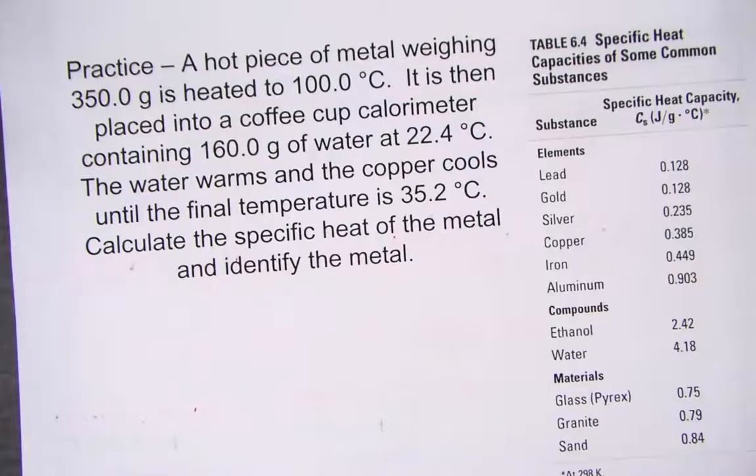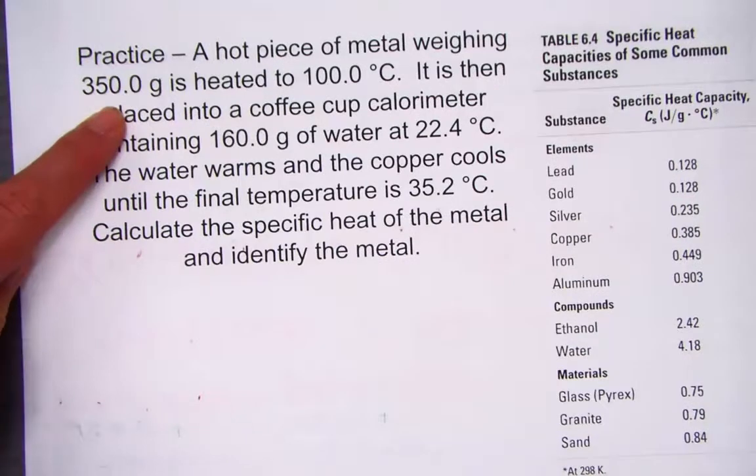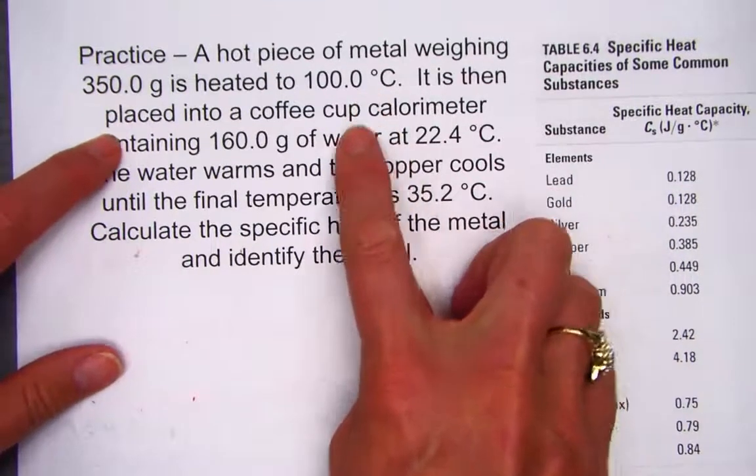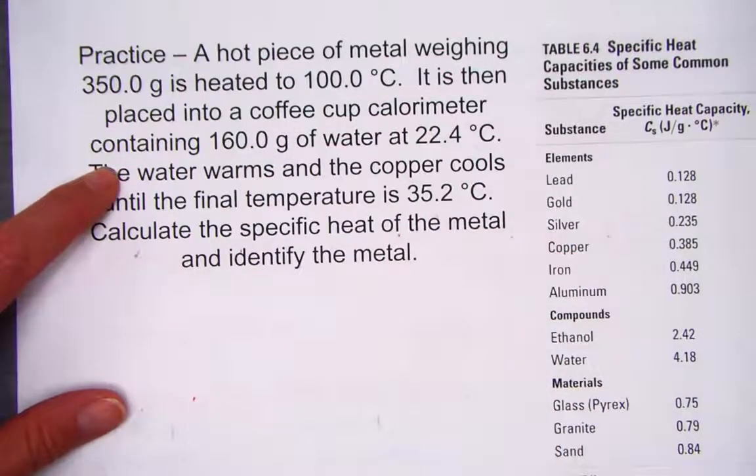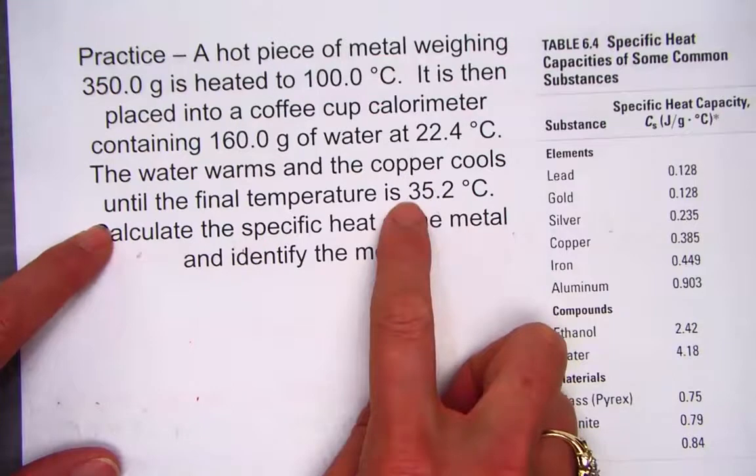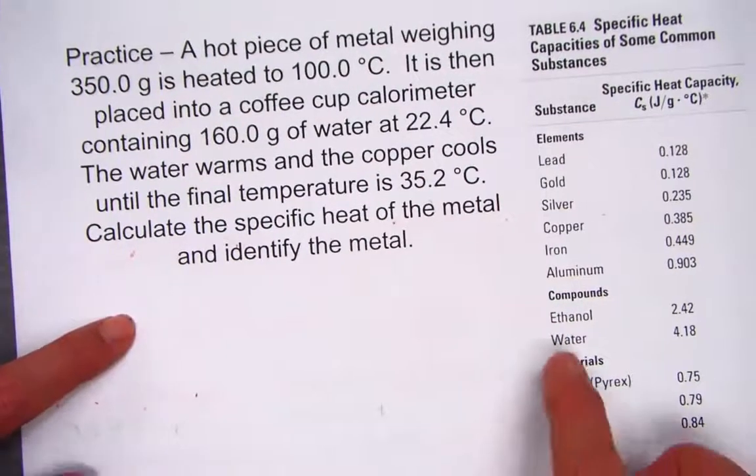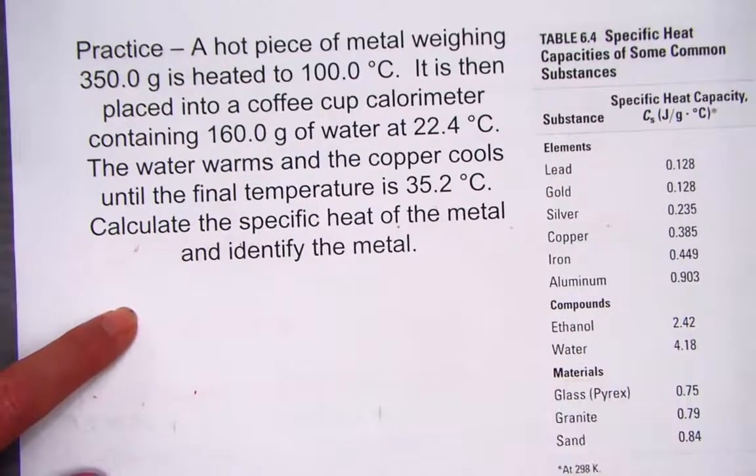We're then challenged in another practice where we have a hot piece of metal weighing 350 grams, and we heat it up to 100 degrees Celsius. It's then placed in a coffee cup calorimeter containing 160 grams of water at 22.4 degrees Celsius. The water warms and the copper cools until the final temperature is 35.2. We'll calculate the specific heat of the metal and identify it from the list provided to the right.